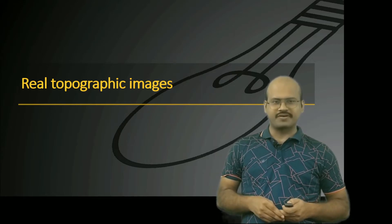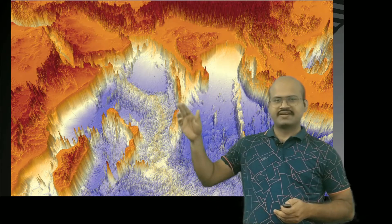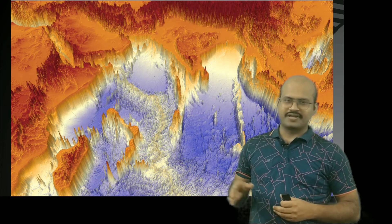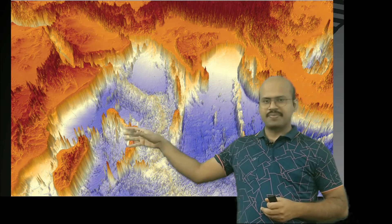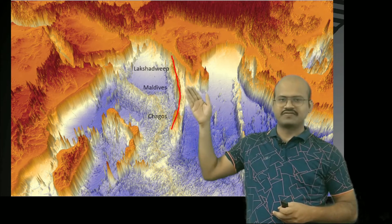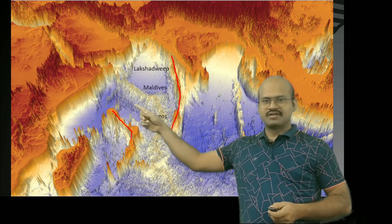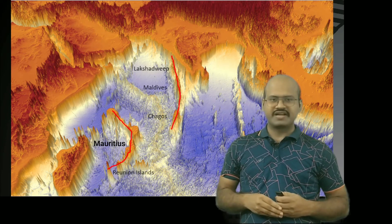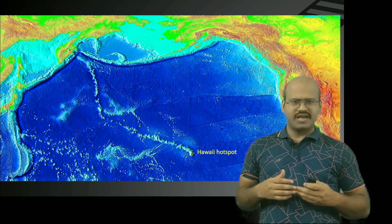Looking at real topographic images of the Indian Ocean, we can see the chain of mountains created by the Reunion hotspot. A mid-oceanic ridge was created and the plate started to move in another direction, so these mountain chains moved accordingly. This whole chain — including Lakshadweep, Maldives, and Chagos — was created by the continuous eruption of magma from the Reunion hotspot.